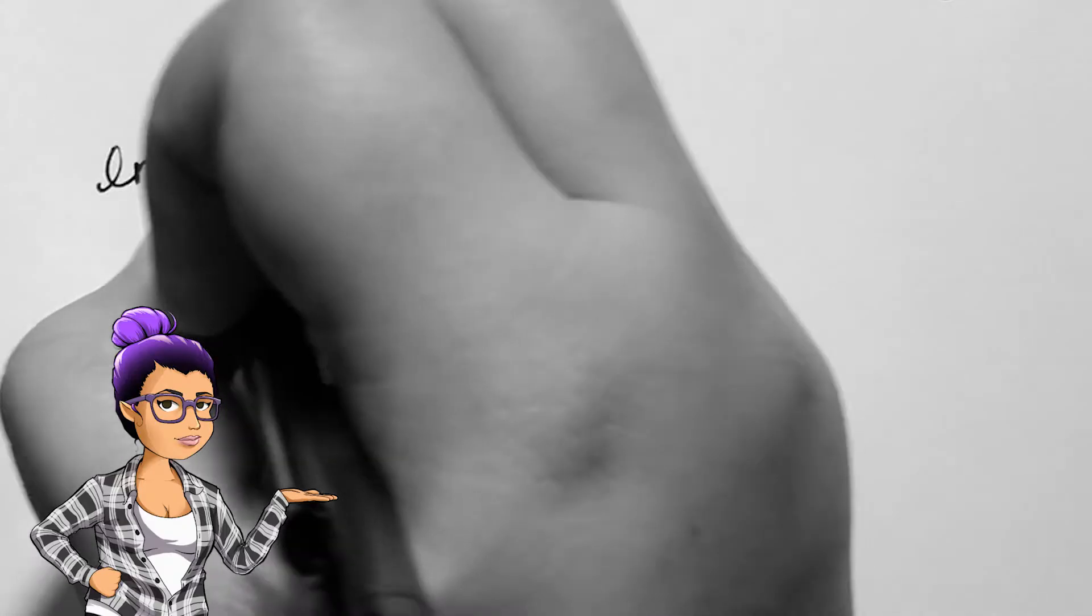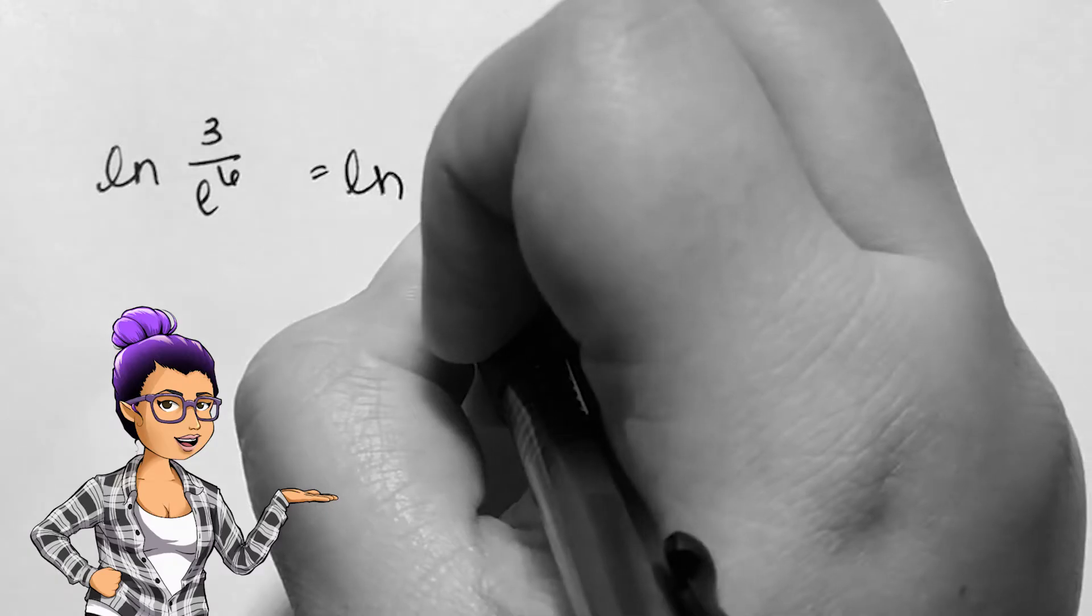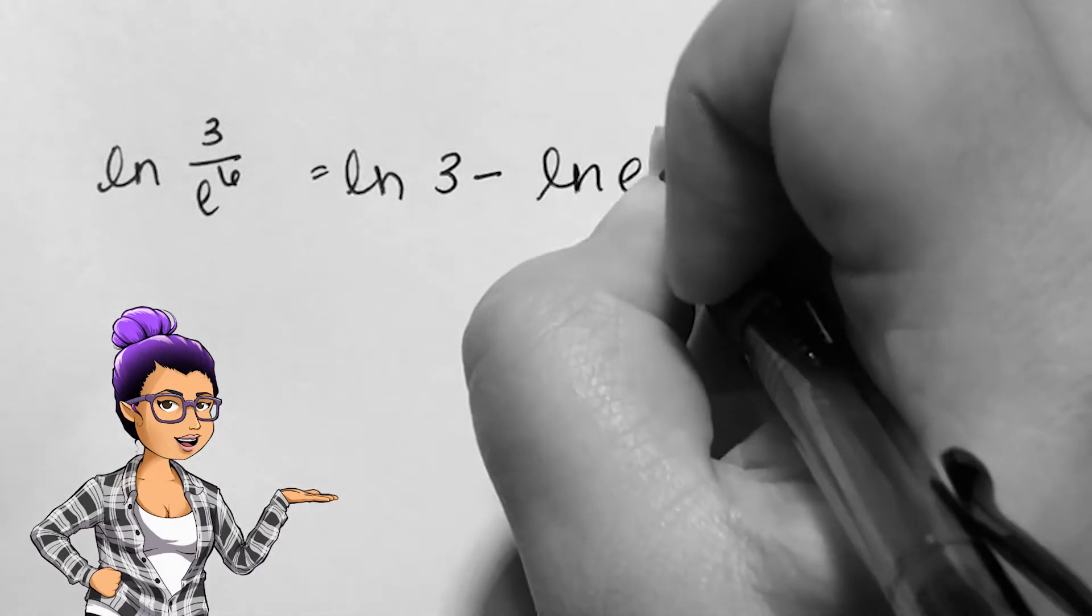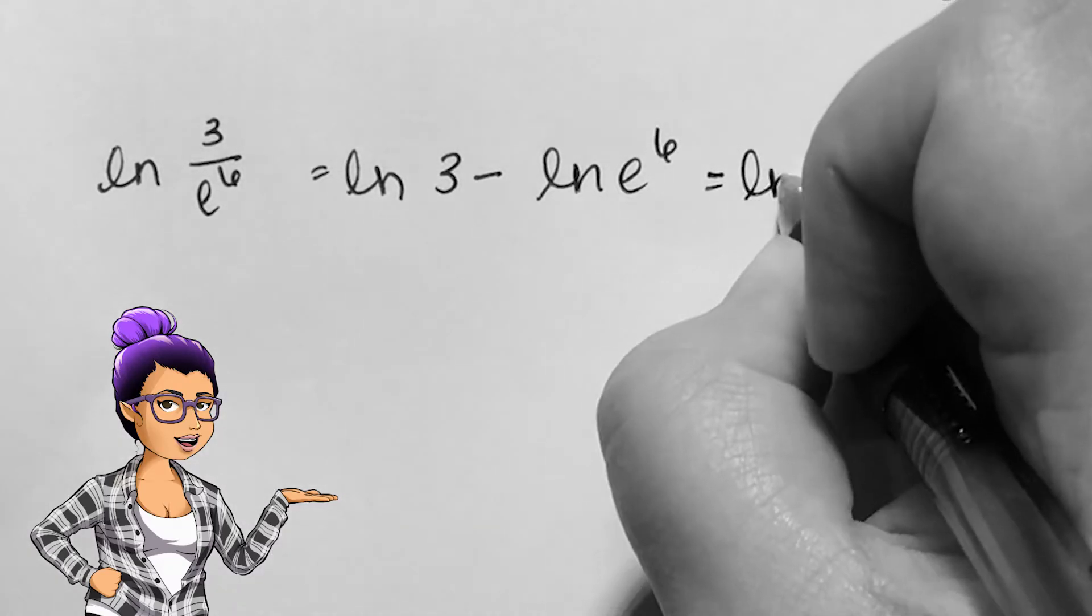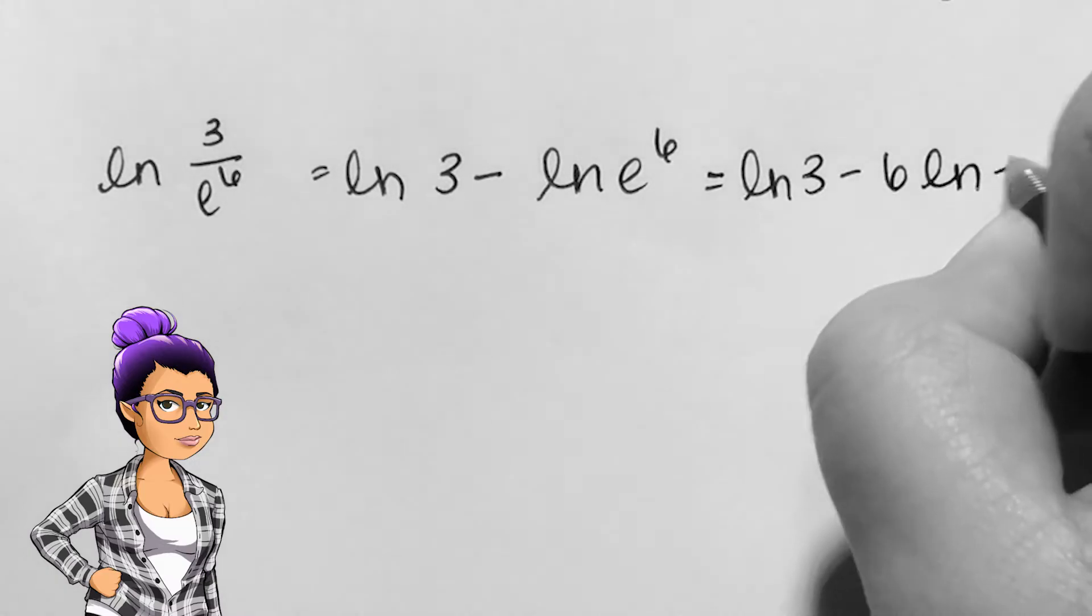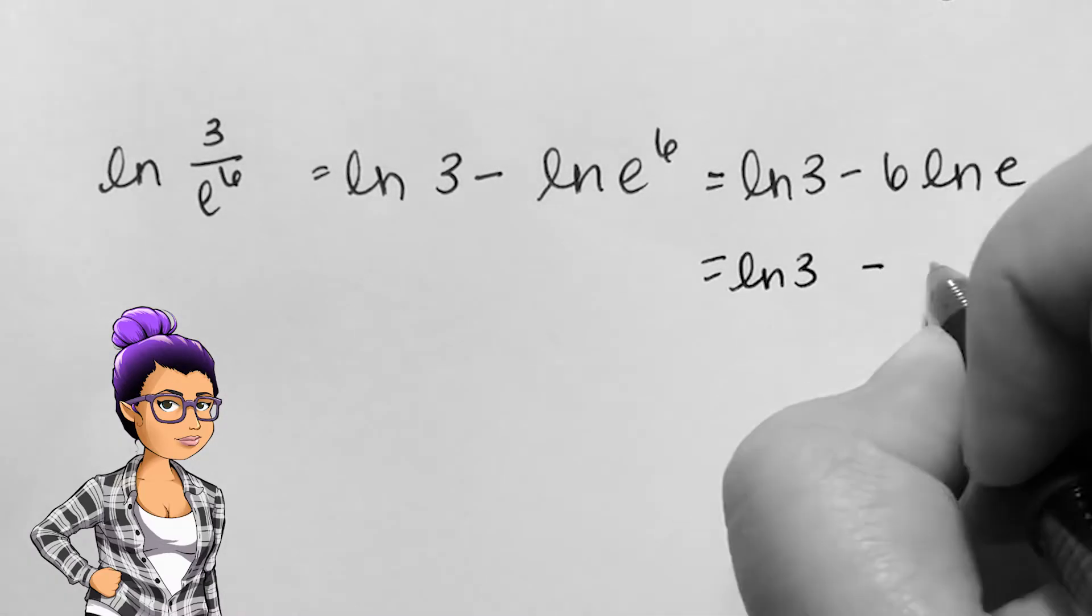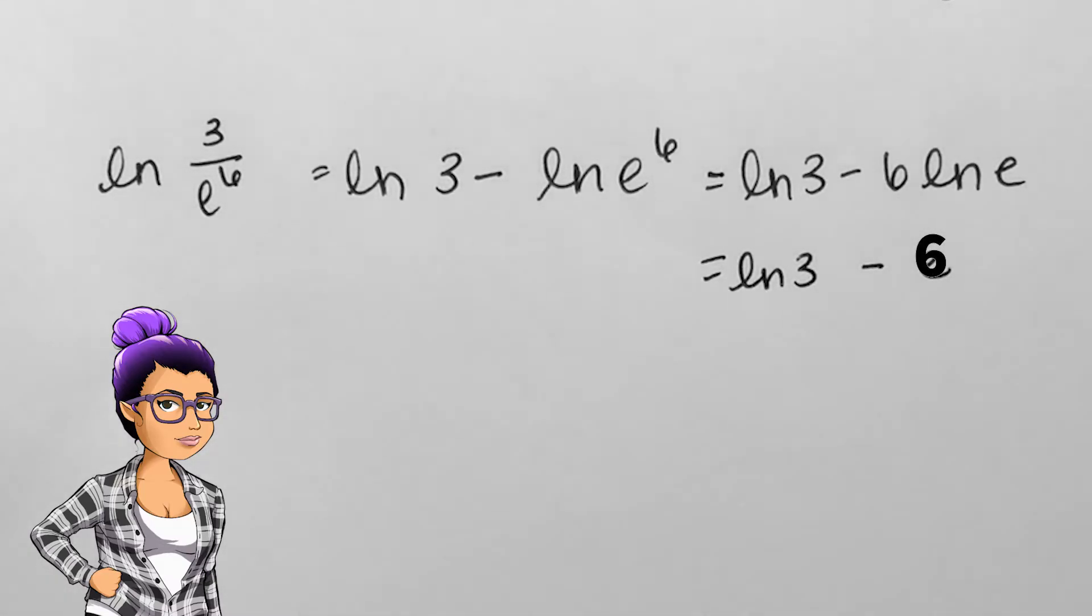Given natural log of 3 divided by e to the sixth power, I can use the quotient and power rules to expand this into two logarithms with no powers left inside either. I can then use the definition of the logarithm to further simplify my answer to natural log of 3 minus 6.